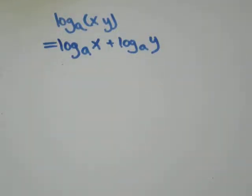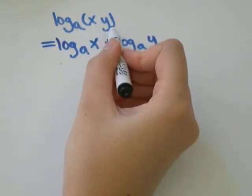In this video we are talking about the product rule of logarithms. Product just means multiply. So this rule is all about what do you do when you see a log to any base of something that's being multiplied.